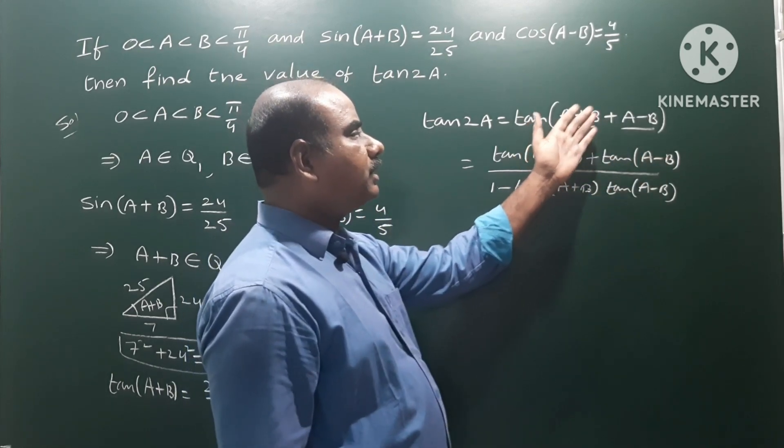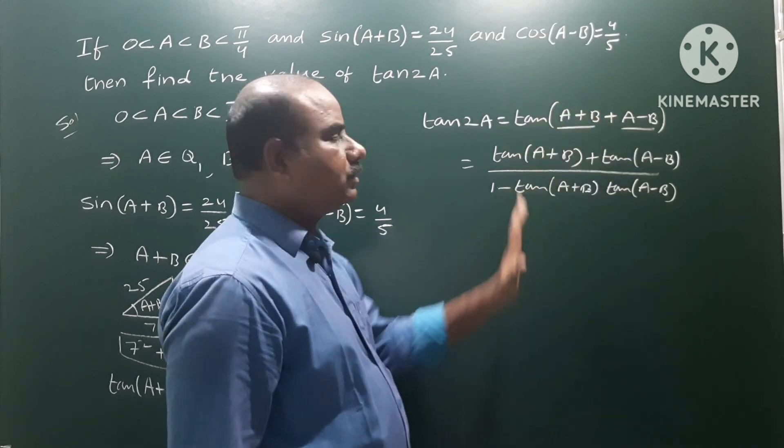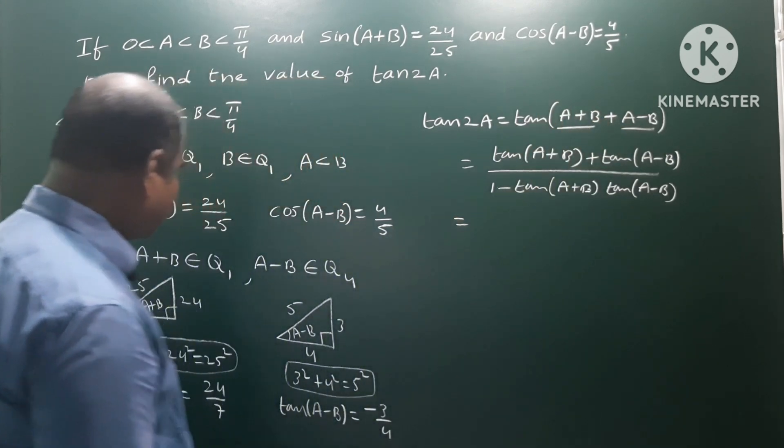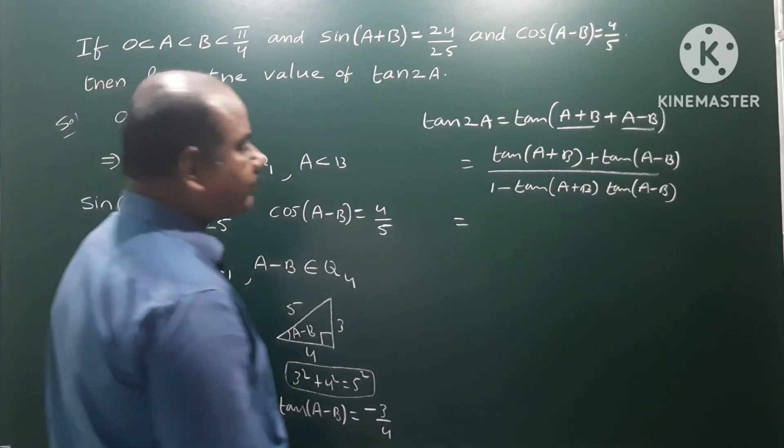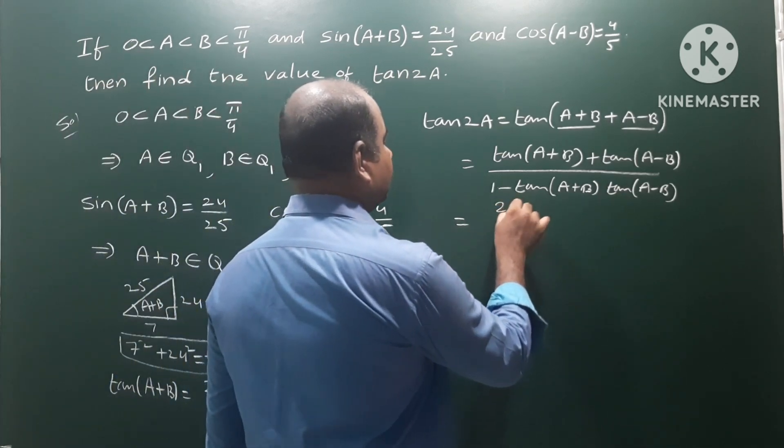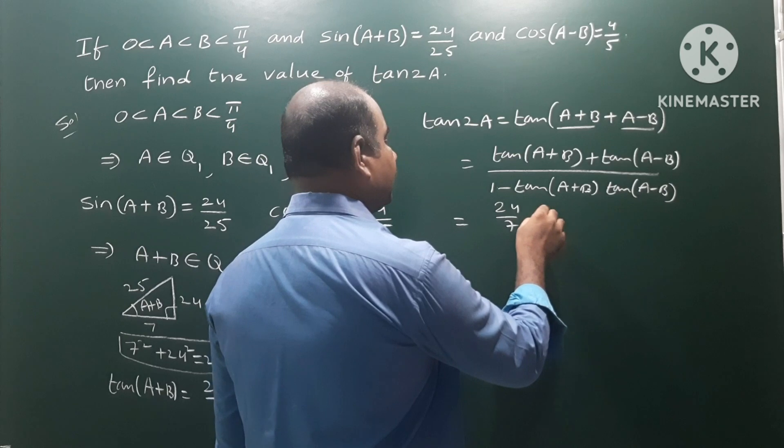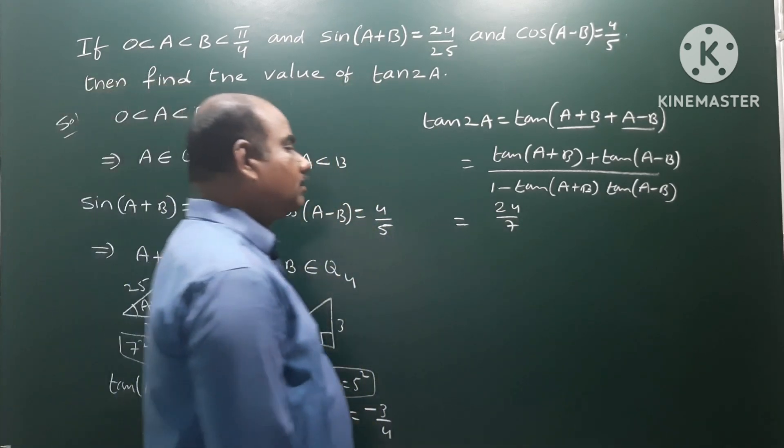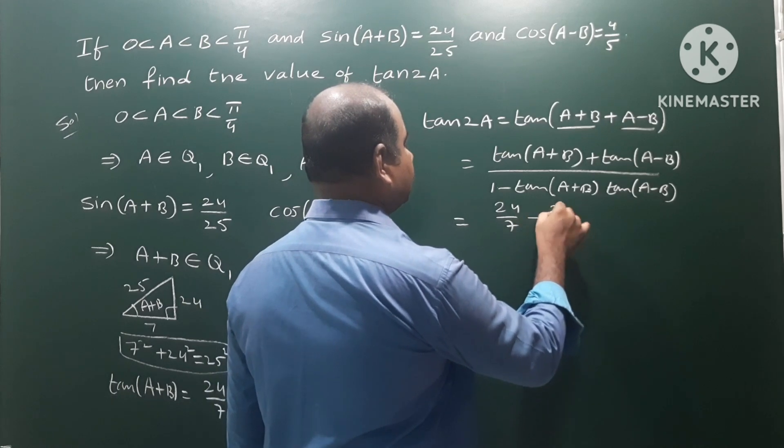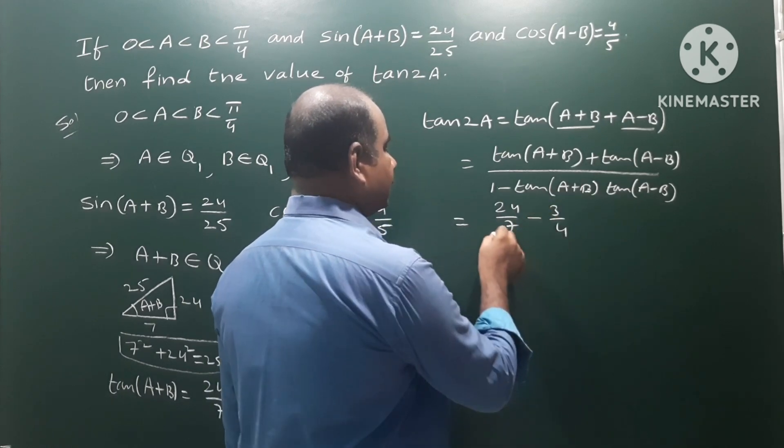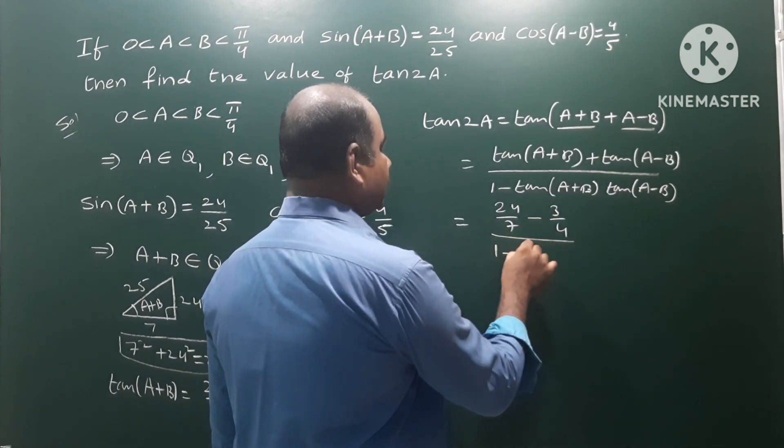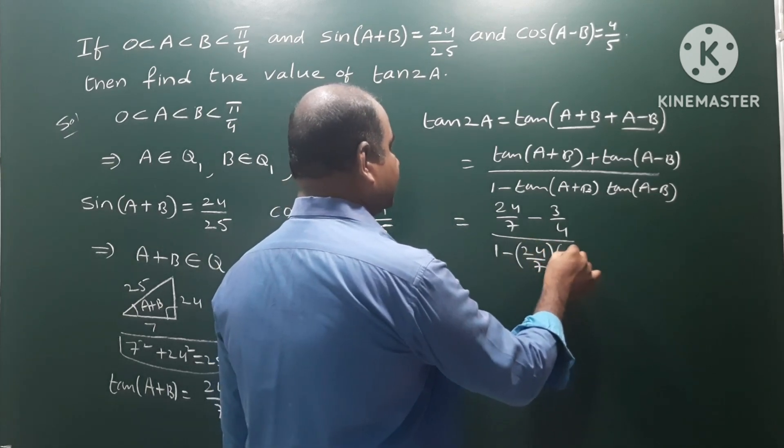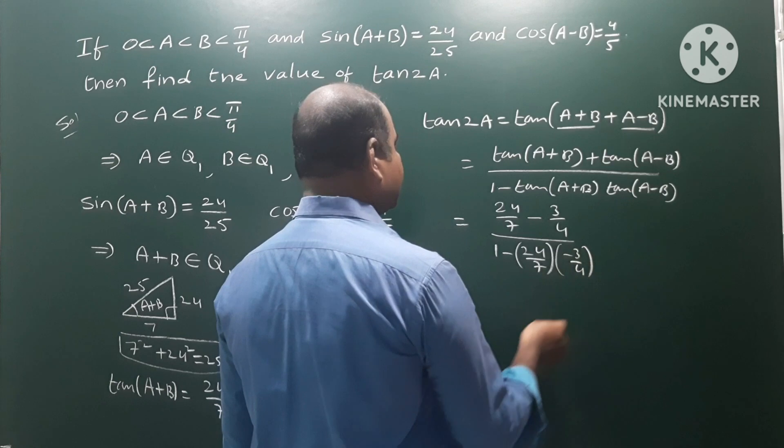Substituting the values: tan(A+B) = 24/7 and tan(A-B) = -3/4. So we have (24/7 + (-3/4)) / (1 - (24/7)(−3/4)). This gives (24/7 - 3/4) / (1 + 72/28).